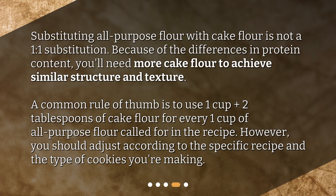Substituting all-purpose flour with cake flour is not a one-to-one substitution. Because of the differences in protein content, you'll need more cake flour to achieve similar structure and texture. A common rule of thumb is to use one cup plus two tablespoons of cake flour for every one cup of all-purpose flour called for in the recipe. However, you should adjust according to the specific recipe and the type of cookies you're making.